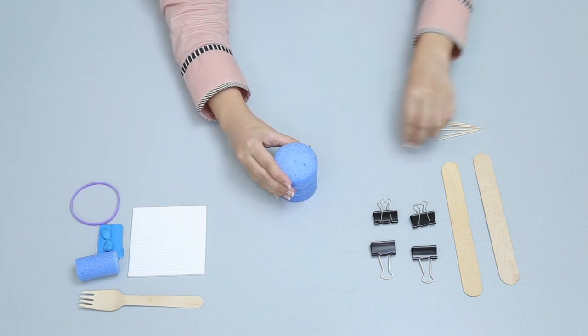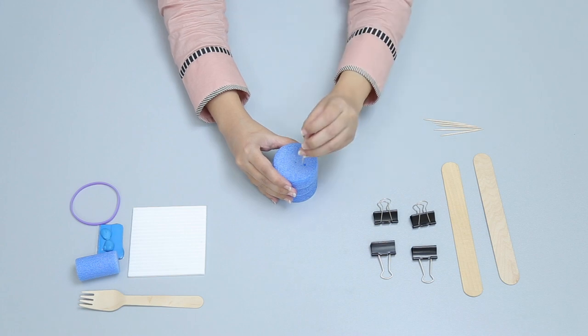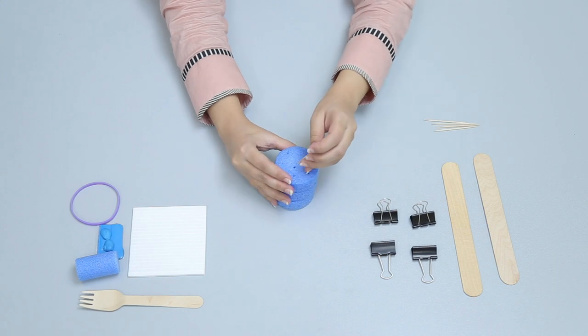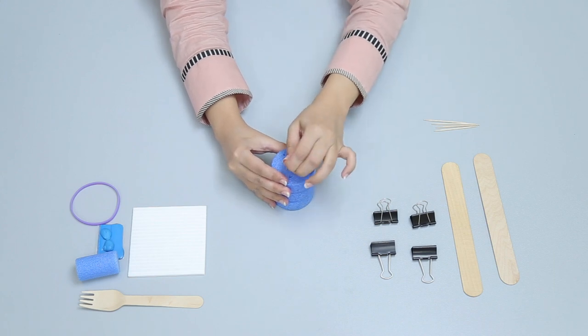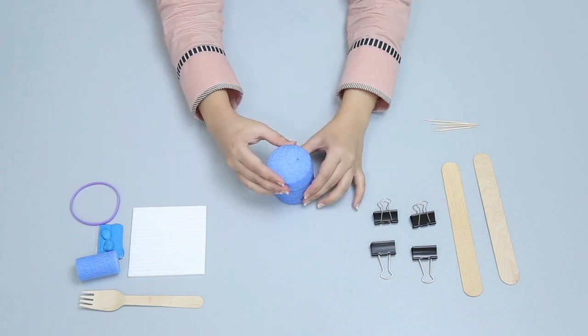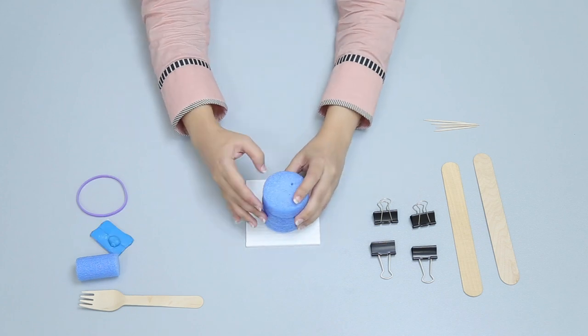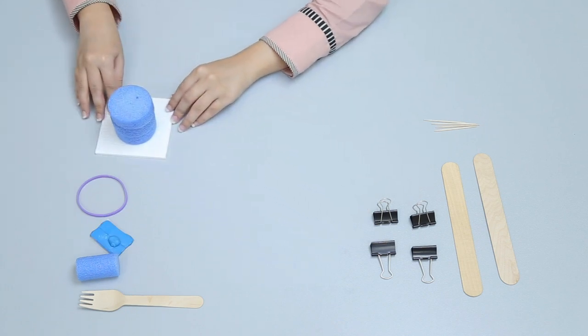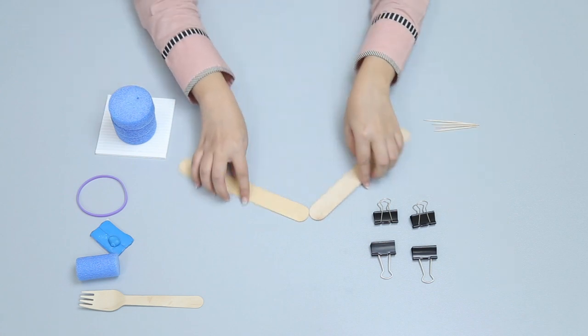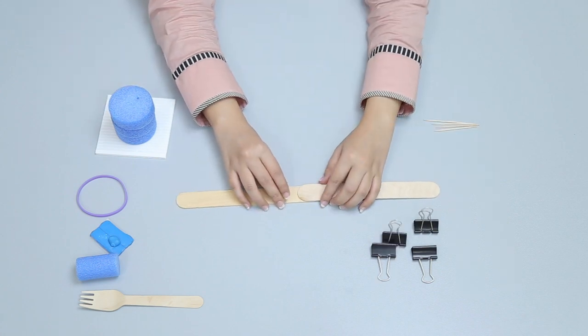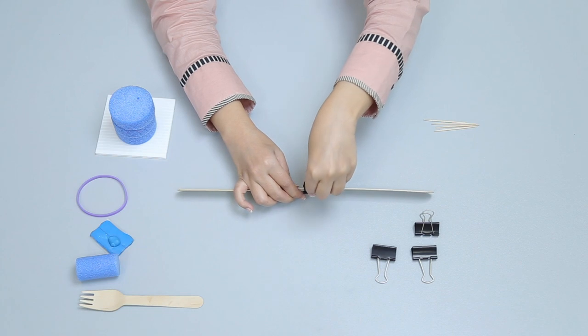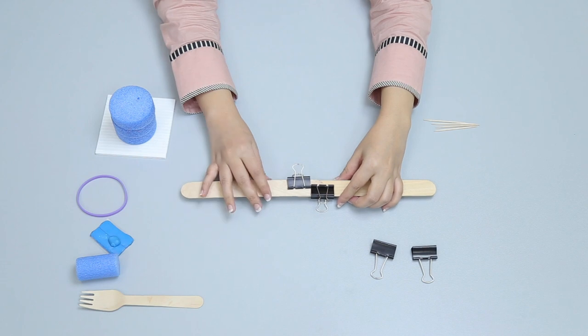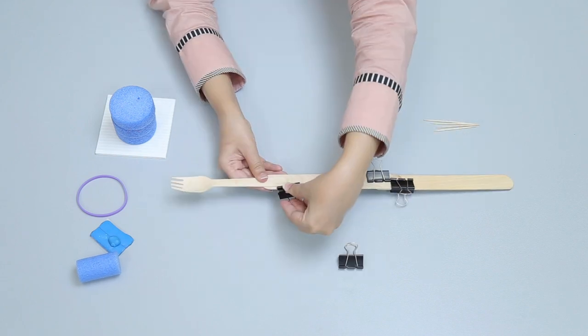To make a load, attach the large foam cylinder with corrugated flute using sticky tack so that it may not move. Join the two craft sticks with two fold back clips. Now attach the spork with the craft stick using fold back clips.